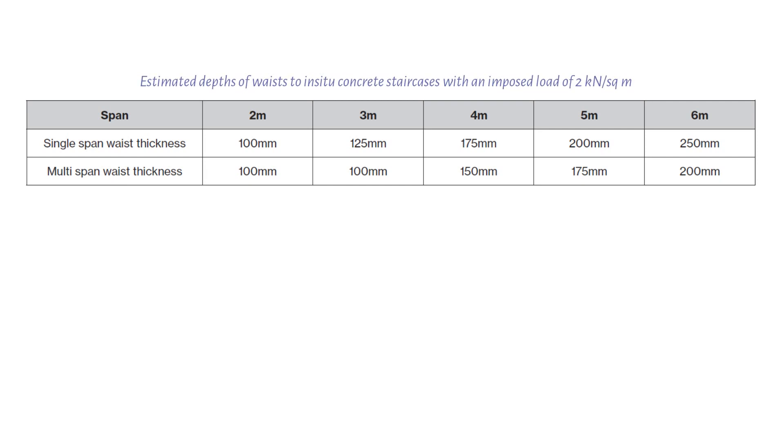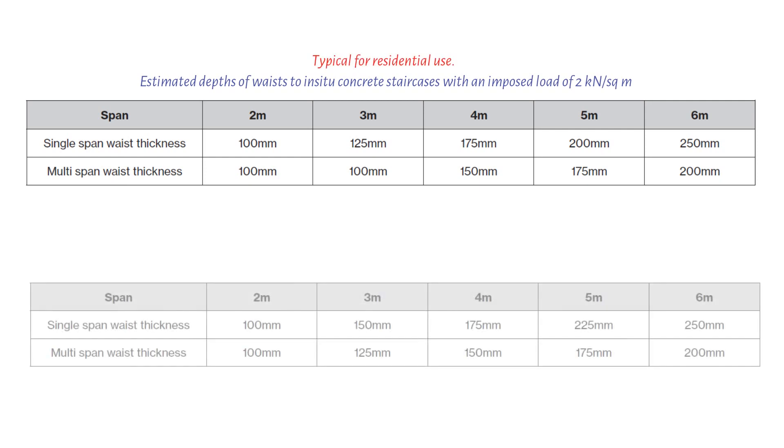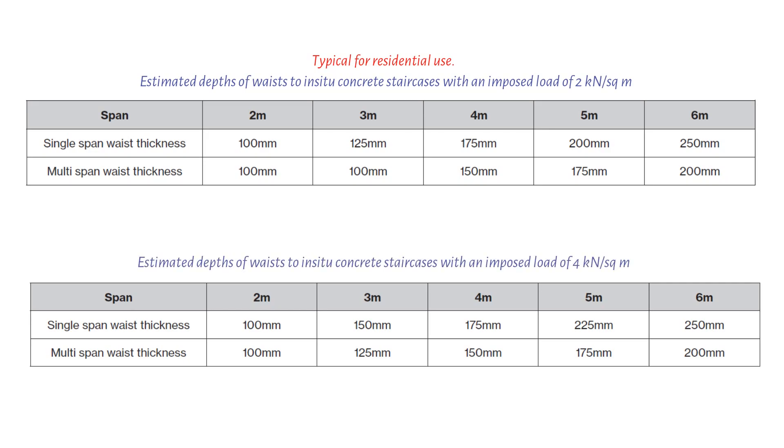The following table is for an in-situ concrete staircase with an imposed load of 2 kilonewtons per square meter, which is typical for residential use. The following table is for staircases that support an imposed load of 4 kilonewtons per square meter. These are more commonly found in commercial buildings such as offices and hotels.